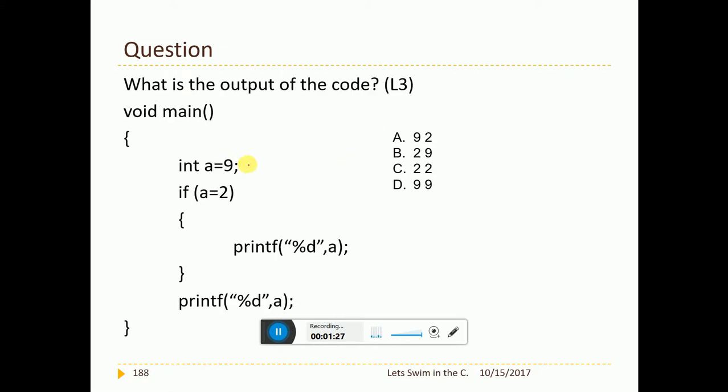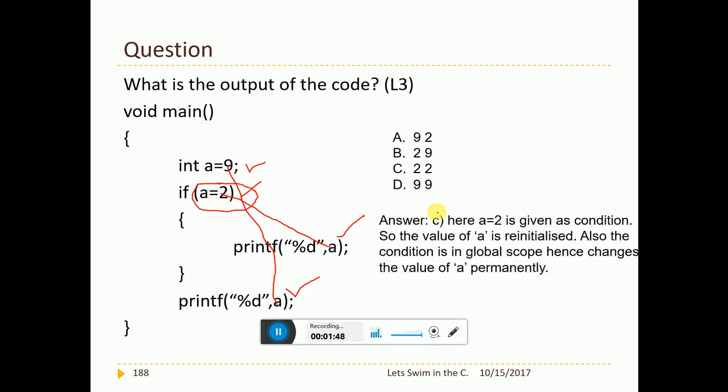Now, int a equal to 9. If a equal to 2, it is not equal to equal to. It is equal to 2 which means I am assigning the value. Print of a and outside the loop I am printing a. Now, what could be the output? Inside this, this value will come. Outside this, this value will come. So, it should be 2 and 9.